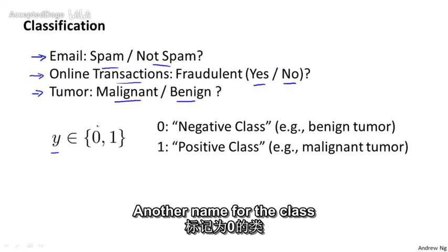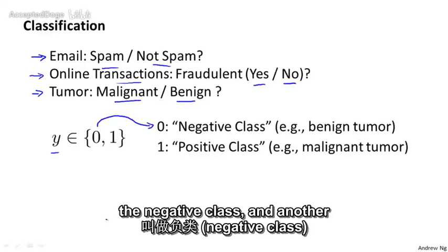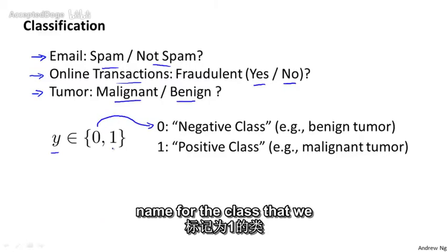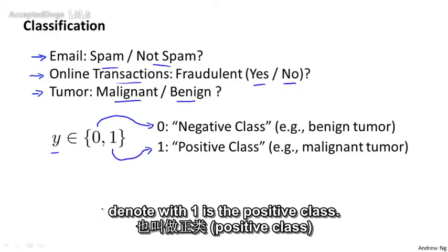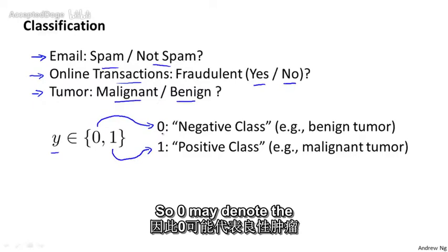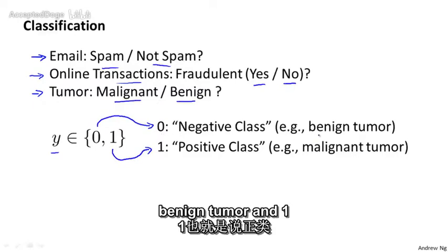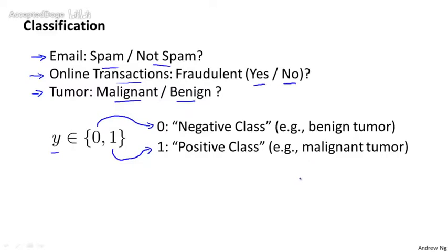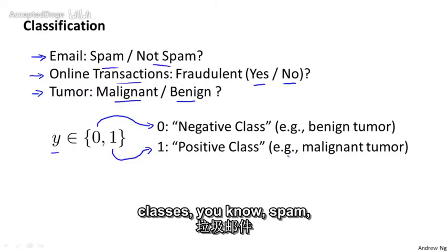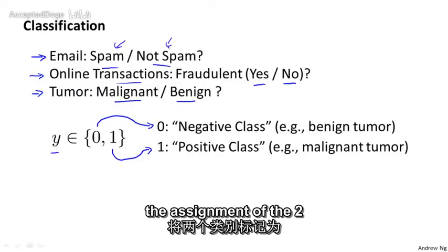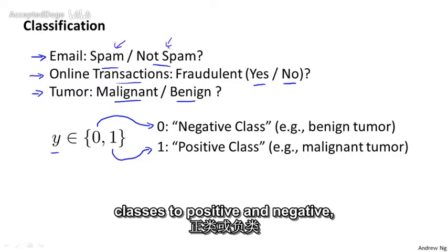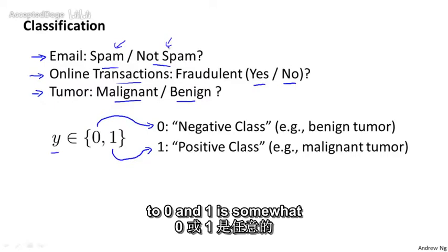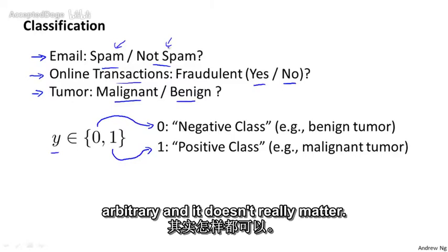Another name for the class that we denote with 0 is the negative class and another name for the class that we denote with 1 is the positive class. So 0 may denote the benign tumor and 1 positive class may denote a malignant tumor. The assignment of the two classes to positive and negative, to 0 and 1 is somewhat arbitrary and it doesn't really matter.